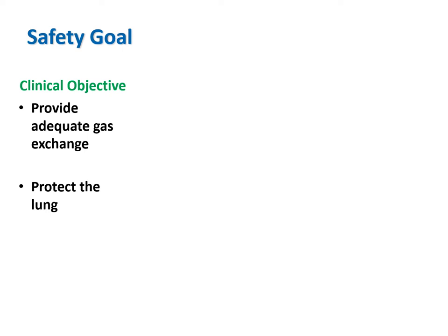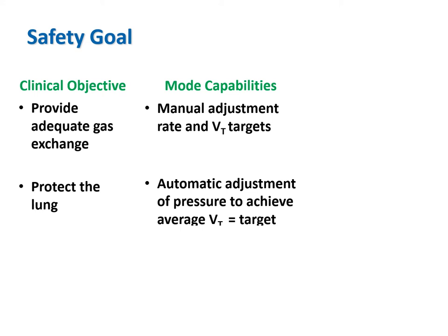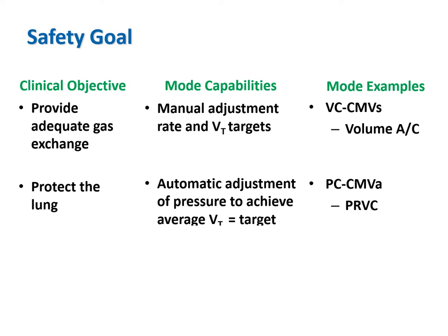Suppose the goal is safety. Our clinical objectives are to provide adequate gas exchange while protecting the lungs. The technical capabilities we want in the mode are the ability to manually adjust minute ventilation independent of changes in lung mechanics—suggesting some form of volume control. An alternative would be pressure control with adaptive targeting, which again allows setting of both mandatory rate and tidal volume dosage. The most common mode in the world is volume control continuous mandatory ventilation, popularly known as volume assist control. Pressure control modes with adaptive targeting, such as pressure regulated volume control, are gaining popularity, especially for ventilating neonates.